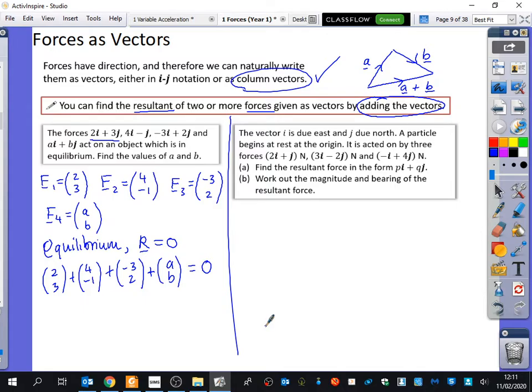What do we do next to solve this problem, to find A and B? How do we find A then? And make it equal zero. Yeah. So the top part, you've got 2 plus 4 minus 3 plus A must be equal to zero. So what's that? 6 minus 3. That's 3 plus A equals zero. So A must be equal to minus 3.